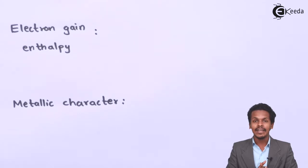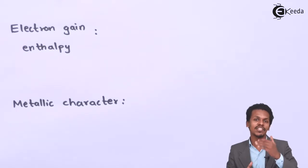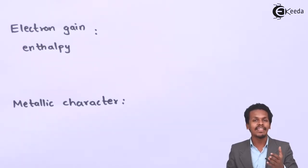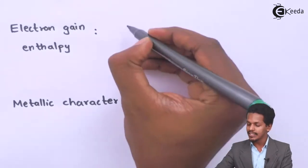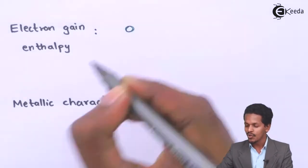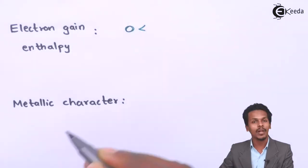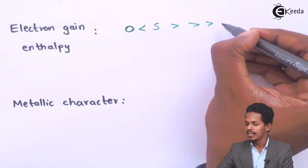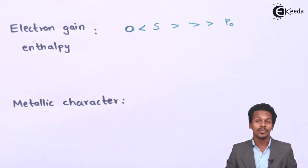That is the reason sulfur has more electron gain enthalpy than oxygen. Moving down from sulfur to polonium, the electron gain enthalpy decreases. So oxygen has lesser electron gain enthalpy compared to sulfur, and from sulfur onward it decreases toward polonium.